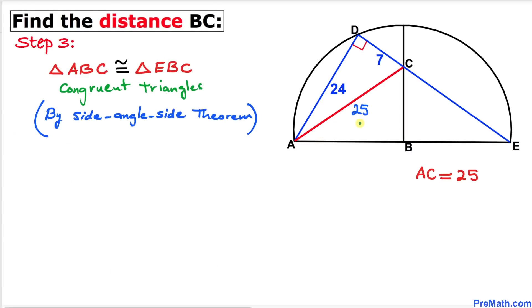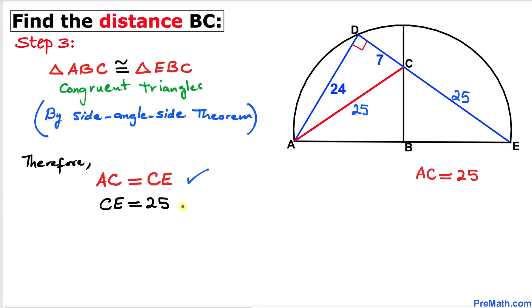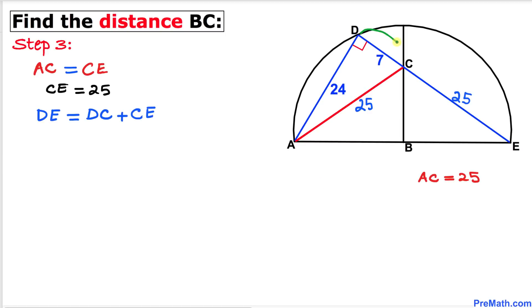Now let's focus on triangles ABC and EBC — they are congruent triangles according to the Side-Angle-Side theorem. Both have a 90-degree angle, both share the same side, and both use the radius. Therefore AC equals CE, and since AC = 25, CE = 25 as well.